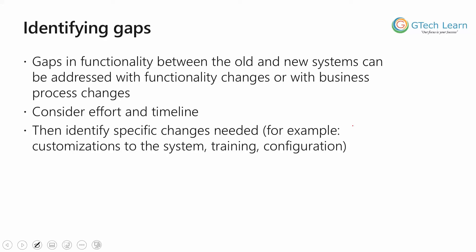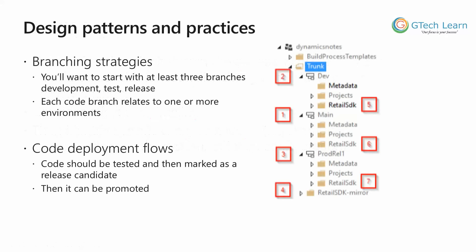Gaps in the functionality between the old and the new system can be addressed with functionality changes or any kind of business process change which may occur during the life cycle of the project. You should consider the efforts and timelines accordingly when identifying those key gaps, and then identify those specific changes needed, categorize them, and prioritize them about when they should be completed.